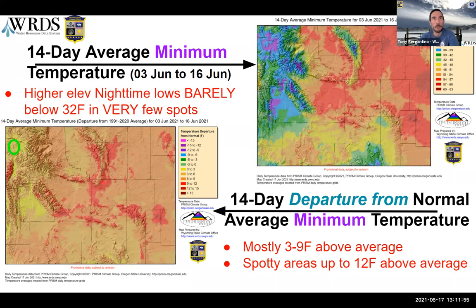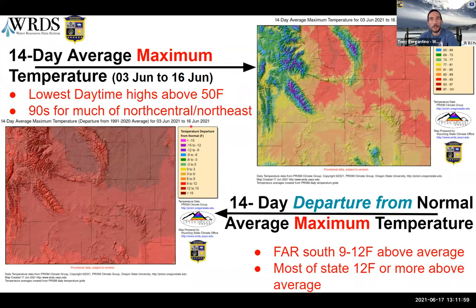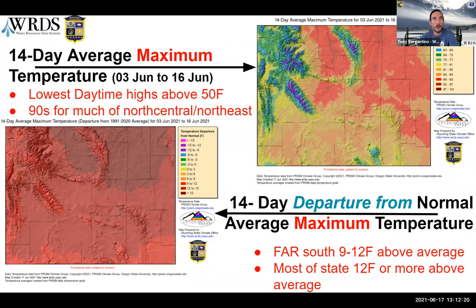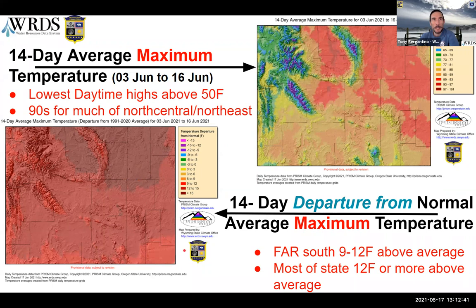The only part of the state where the 14-day average minimum temperature was actually below normal was probably a couple of square kilometers — so don't go looking for it. Looking at the maximum temperatures, we've got daytime highs in the 80s and 90s for much of the north-central and northeastern part of the state. Most of the state from a certain line northward is 12 or more degrees above average, with one area being over 15 degrees above average for the last two weeks. And unfortunately, that's where we're seeing the SPEI, SPI, and soil moisture all going down.